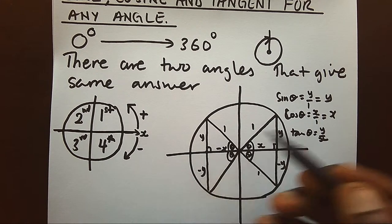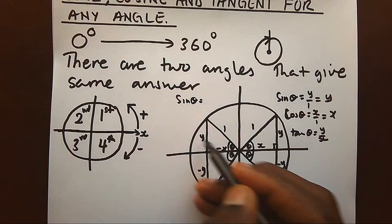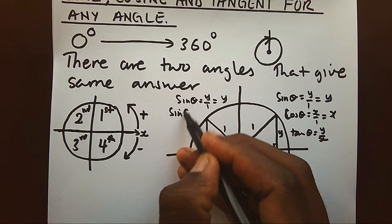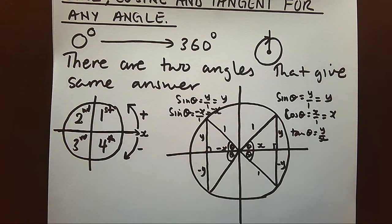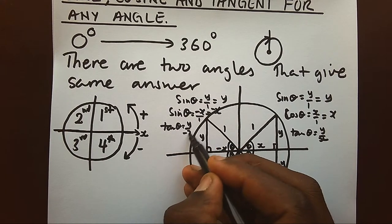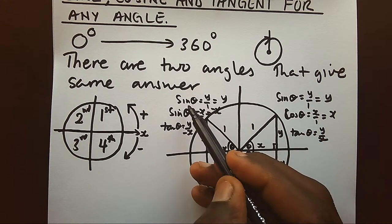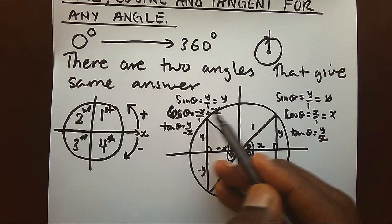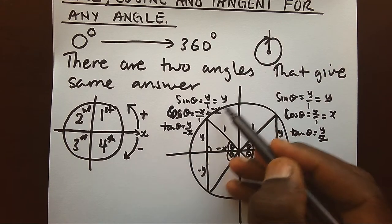In the second quadrant, sine theta gives y over 1, giving y which is positive. Cosine gives negative x over 1, giving negative x. Tangent gives y over negative x, giving a negative result. So in the second quadrant, sine is positive but cosine and tangent are negative — only the sine answer is positive.